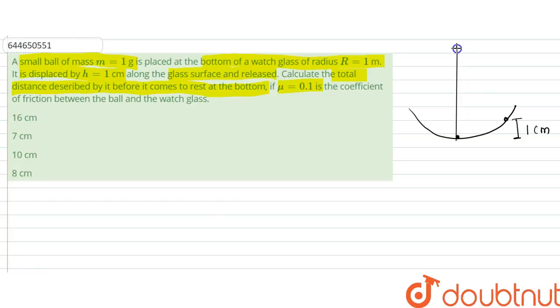The radius of this watch glass, let that be r, that is given as 1 meter, and the mass of this is 1 gram, and mu, the coefficient of friction, is 0.1.